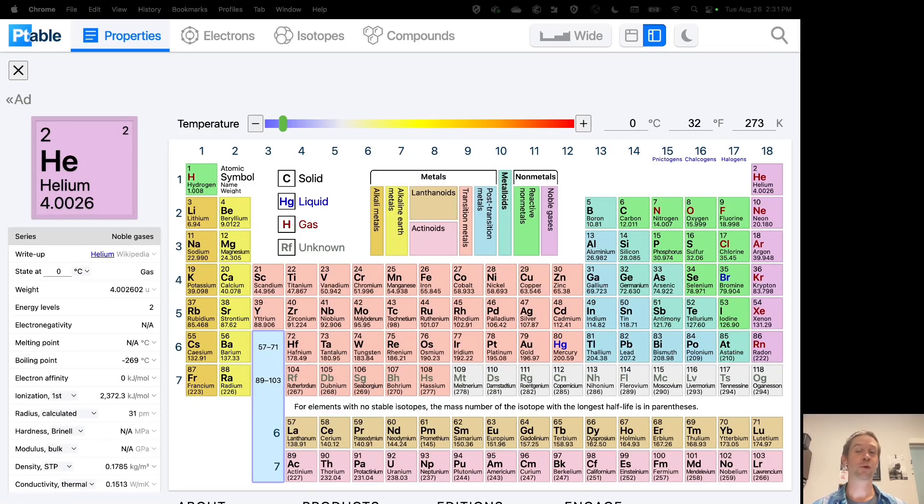There are nearly 120 known chemical elements. That's a lot of stuff to keep track of and a lot of information to organize, and the periodic table is the primary tool we use to organize information about the chemical elements.